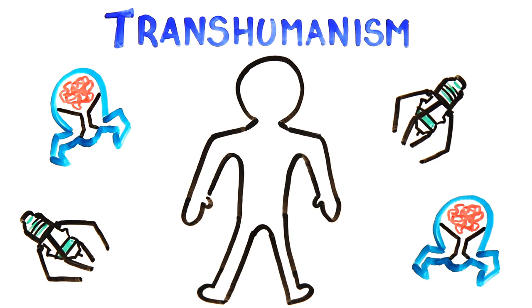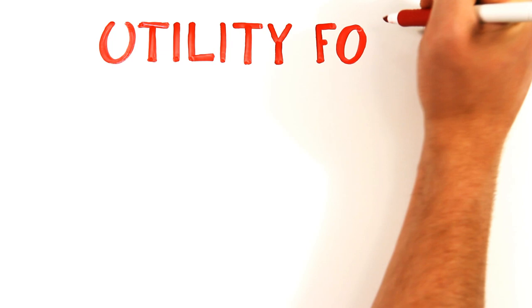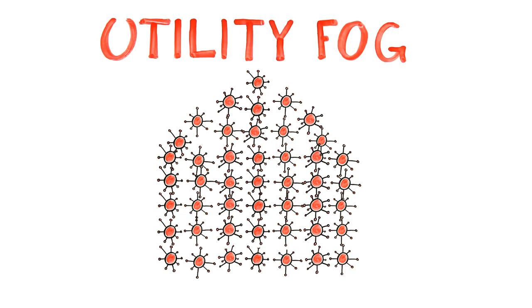Ever heard of utility fog? Imagine a cloud of countless microscopic robots, which can be rearranged into virtually any configuration nearly instantaneously. Buildings could be constructed as necessary, and disassembled when space was needed for something else. Picture your house disassembling when you leave in the morning, so that space can be used for something else.